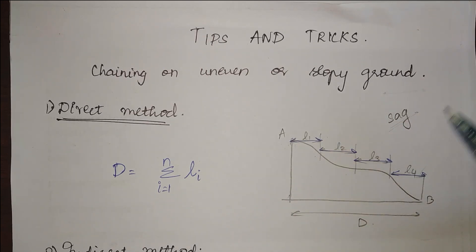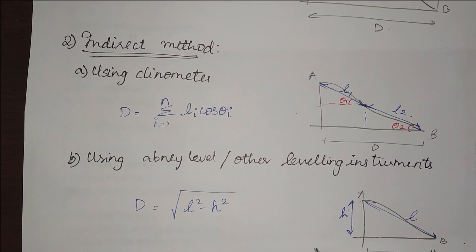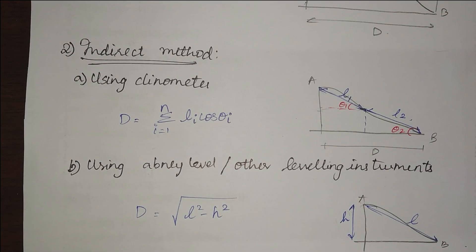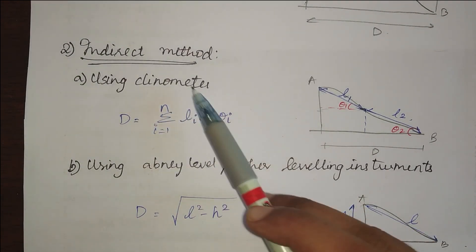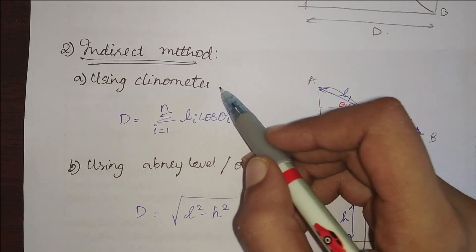Next method is indirect method and indirect method consists of three types. The first one is using a clinometer. If you don't know what is a clinometer, clinometer is used to find the angles in a sloping ground.